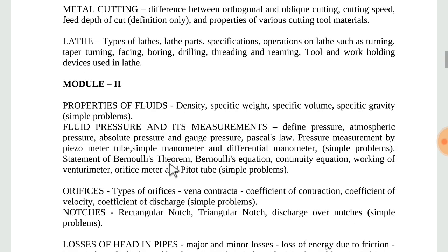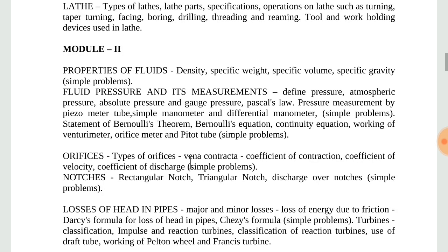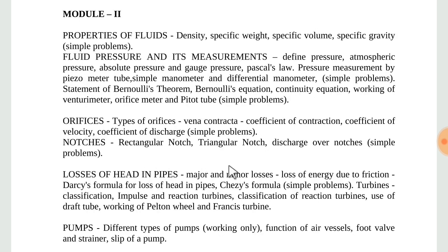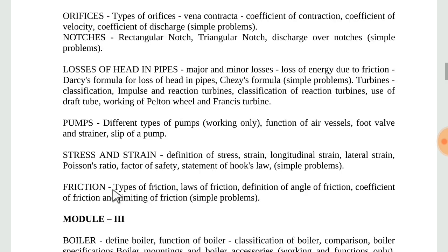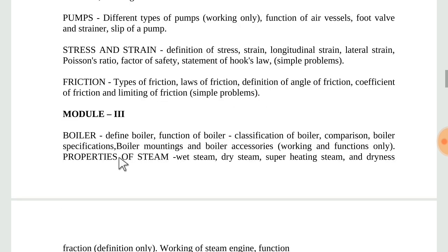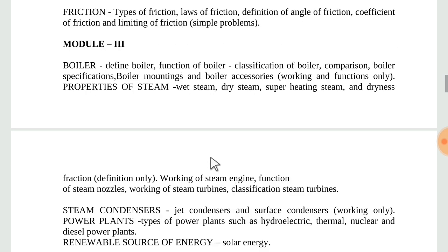Module 2 contains properties of fluids - the fluid mechanics chapter covering density, specific weight, specific volume, specific gravity, etc. Then fluid pressure and its measurement, orifice meter, notch, and losses in pipes. Another important topic is pumps, then stress and strain, and friction.